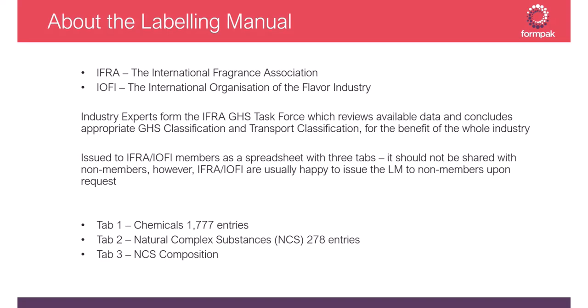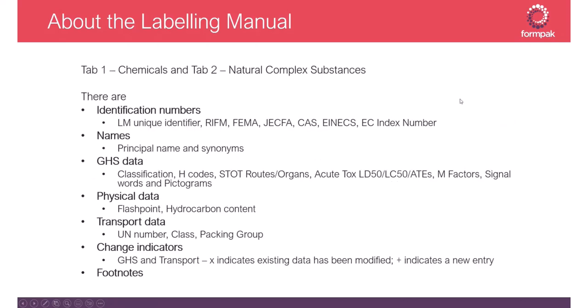On tab two there are 278 natural complex substances — these are essential oils and related entities. Tab three contains the composition of the natural complex substances listed. Tabs one and two are fairly similar except tab one covers chemicals and tab two covers natural complex substances.